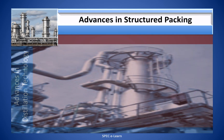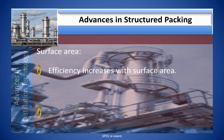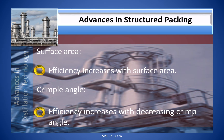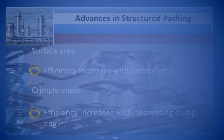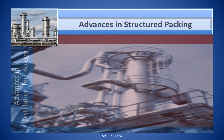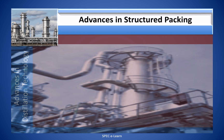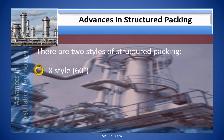How do surface area and crimp angle impact packing performance? As regards surface area, efficiency increases with surface area. As regards crimp angle, efficiency increases with decreasing crimp angle. The impact of crimp angle on flooding capacity is significant — as inclination angle increases, efficiency decreases but capacity increases. There are two styles of structured packing: X-style with an inclination angle of 60 degrees, and Y-style with an inclination angle of 45 degrees. The X-style has higher capacity and slightly less efficiency than the Y-style.